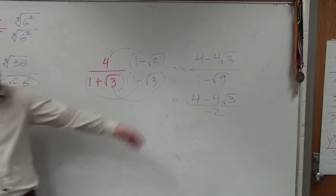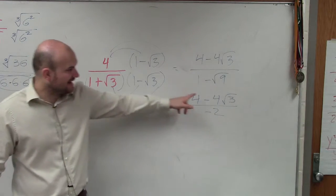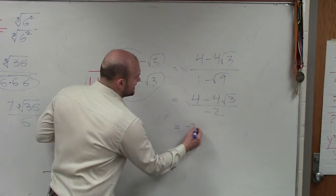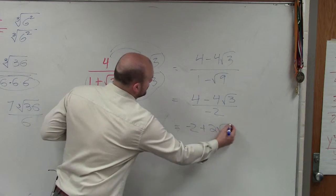Now I simply take the negative 2 and divide it into both of those terms. And what I obtain is a negative 2 plus 2 square root of 3.